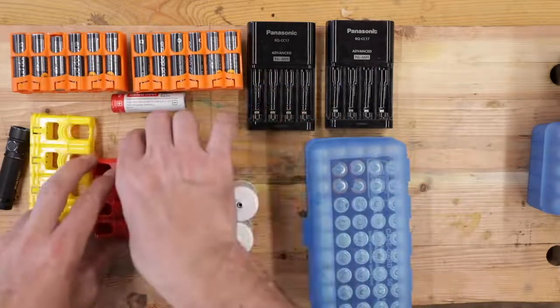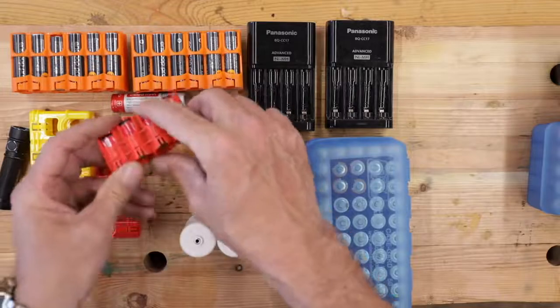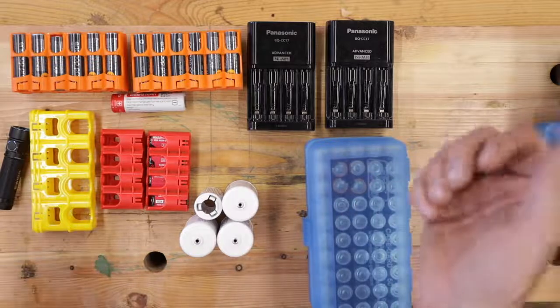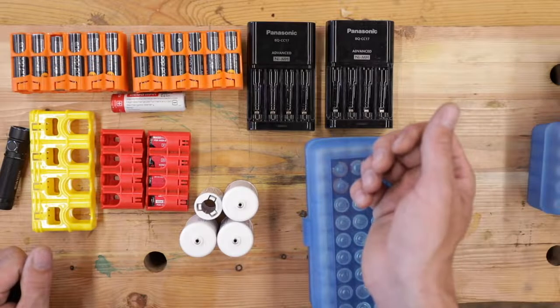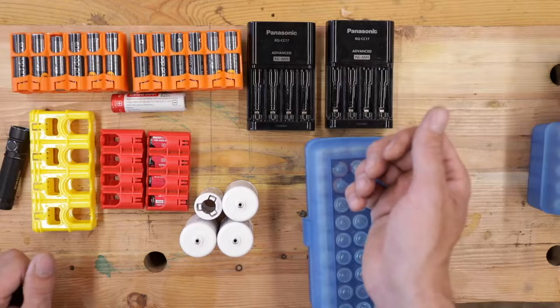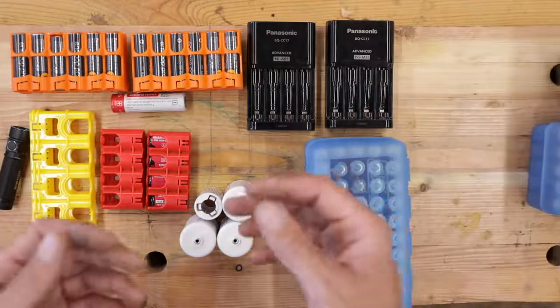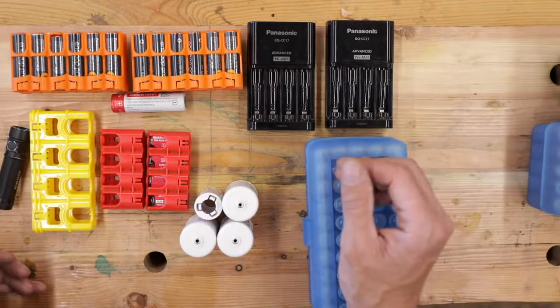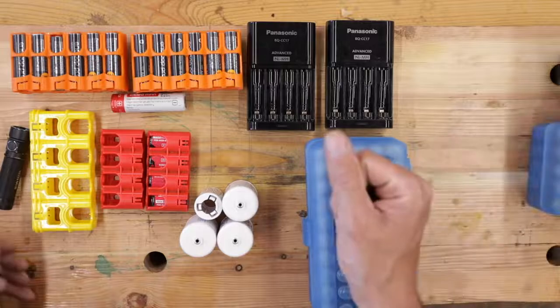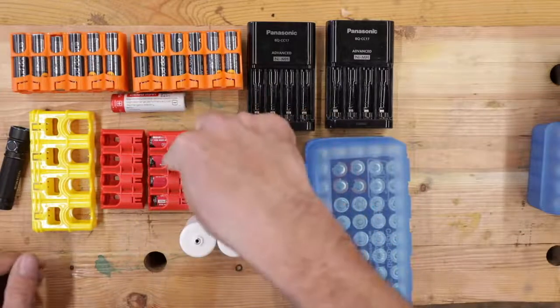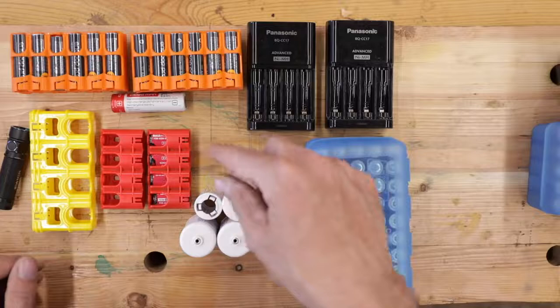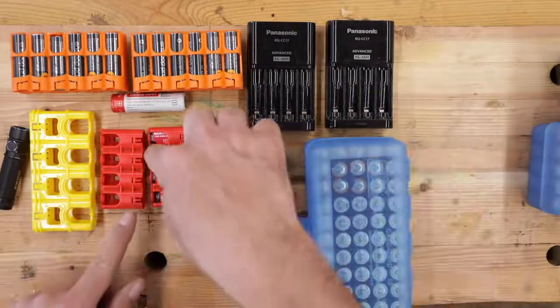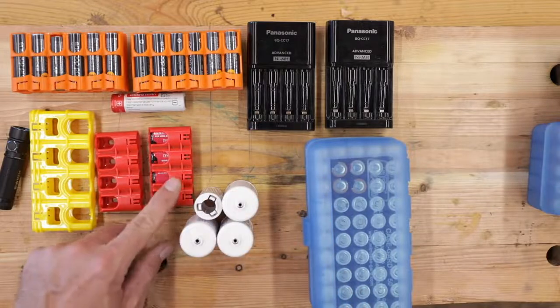I'm not going to give up on the big ones, the 18650s, because they're just so good for some of the larger weapons lights and the really bright flashlights. We live on a big piece of property and we need to have a serious light. I'm also going to be keeping the CR123s, and the only reason I'm keeping those is because of Surefire. I like Surefire lights for a bedside gun.